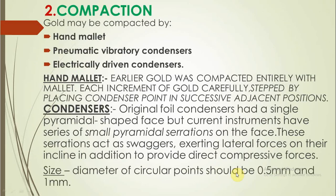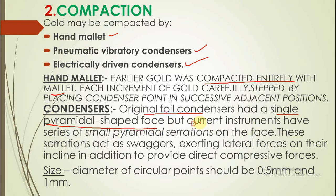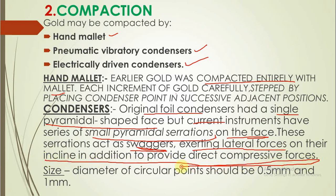Compaction means condensing. Gold can be condensed by hand mallet, pneumatic vibratory condensers, or electrically driven condensers. Hand mallet means hitting lightly. In earlier times it was done entirely with mallets; nowadays condensers are used. Original foil condensers had a pyramidal-shaped face, but currently available condensers have small pyramidal serrations on the face. These serrations act as grippers, exerting lateral forces on the inclines in addition to providing direct compaction forces.